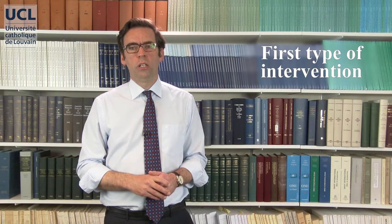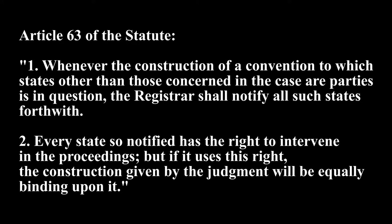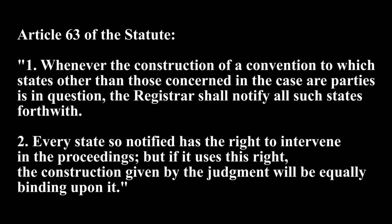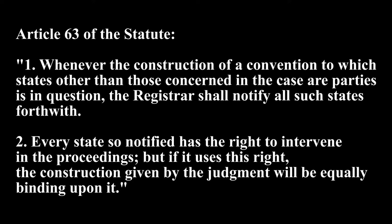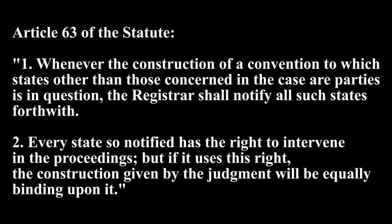Three types of interventions are possible and must be distinguished. Under the first type, the intervening state has a right to intervene in the proceedings. This possibility is envisaged under Article 63 of the statute, which reads: 'Whenever the construction of a convention to which states other than those concerned in the case are parties is in question, the registrar shall notify all such states forthwith. Every state so notified has the right to intervene in the proceedings.' In the dispute between Australia and Japan about whaling in the Antarctic, decided in 2014, New Zealand intervened on the basis of Article 63 because it wanted to support the Australian interpretation of the International Convention for the Regulation of Whaling, to which it is also a party.